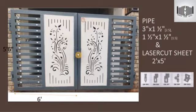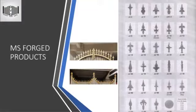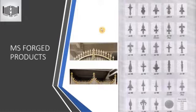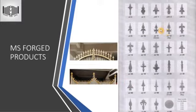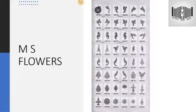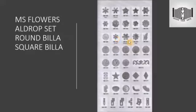Now we'll speak about the wide range of products available in the market. First, the MS forge products, which are readily available - if not locally, you can contact us and a number will be provided at the end of the video. All these MS forge products are used mostly on the topmost part of gates or grills. Next, we have different types of flowers, which are used on the topmost or internal part of the gate depending on your design.